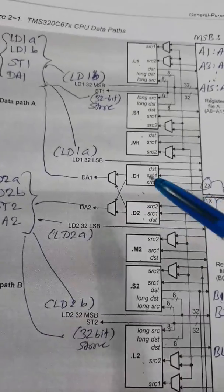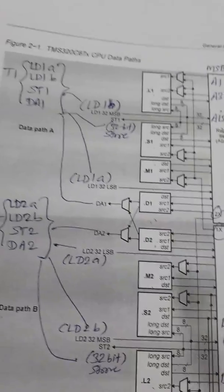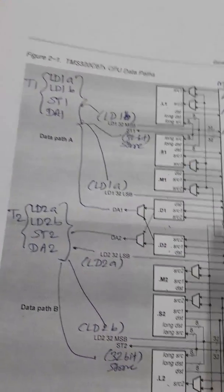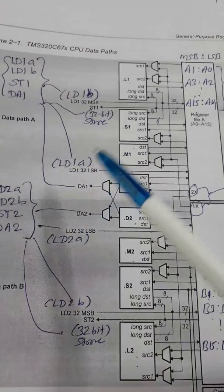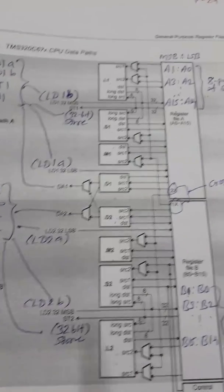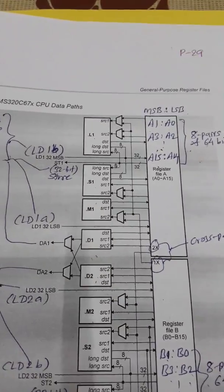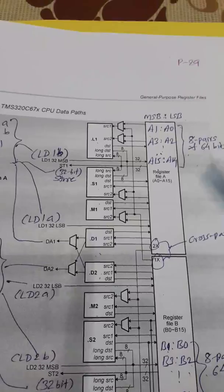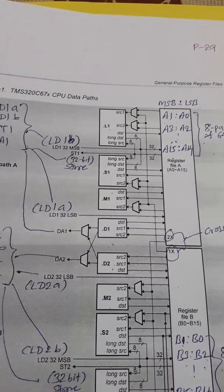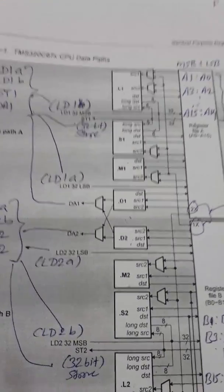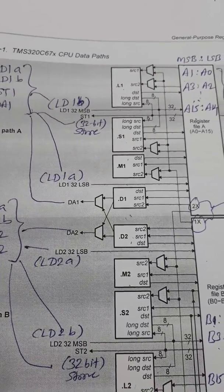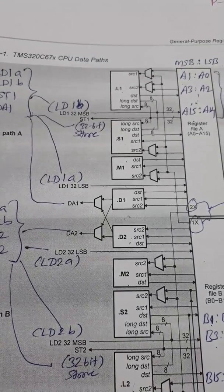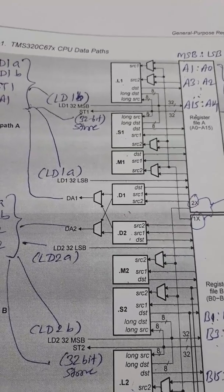So I think this is general data path for a brief explanation of this diagram given on page number 29 in this PDF file that I have shared with you. That is the TMS320C67 CPU data path. Thank you very much.